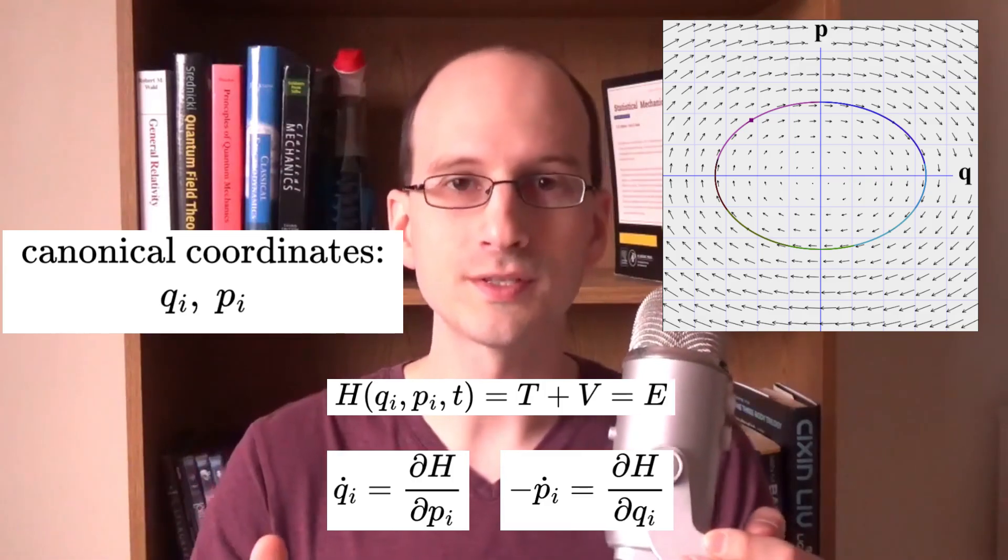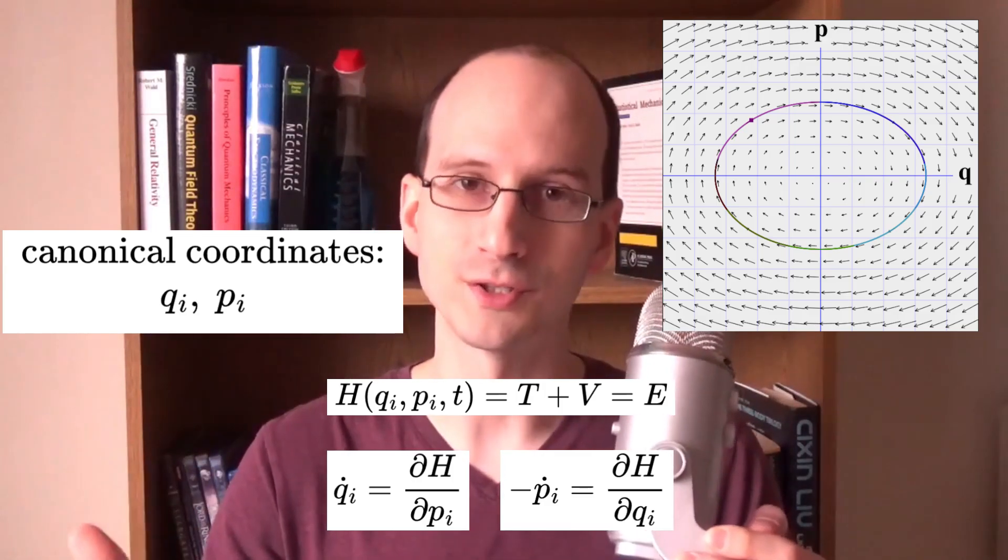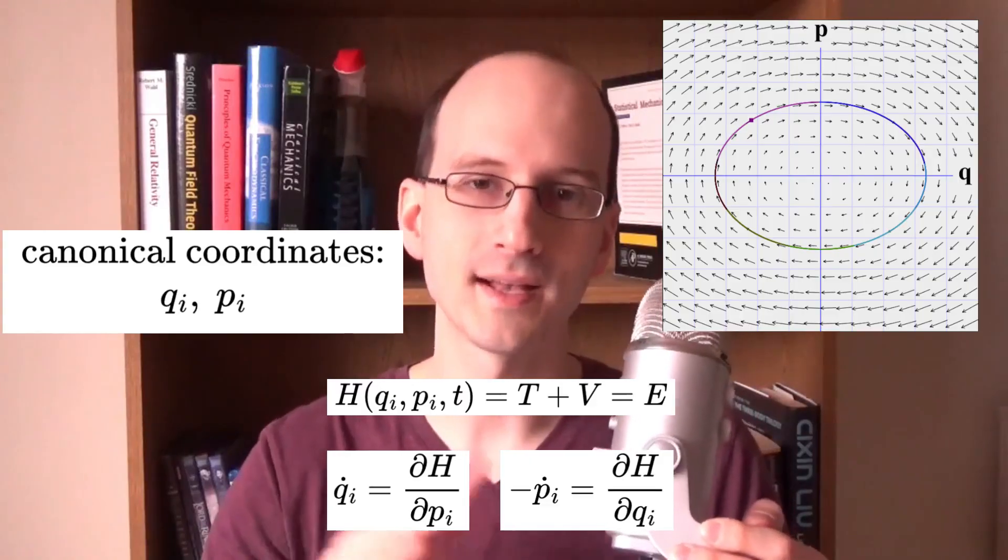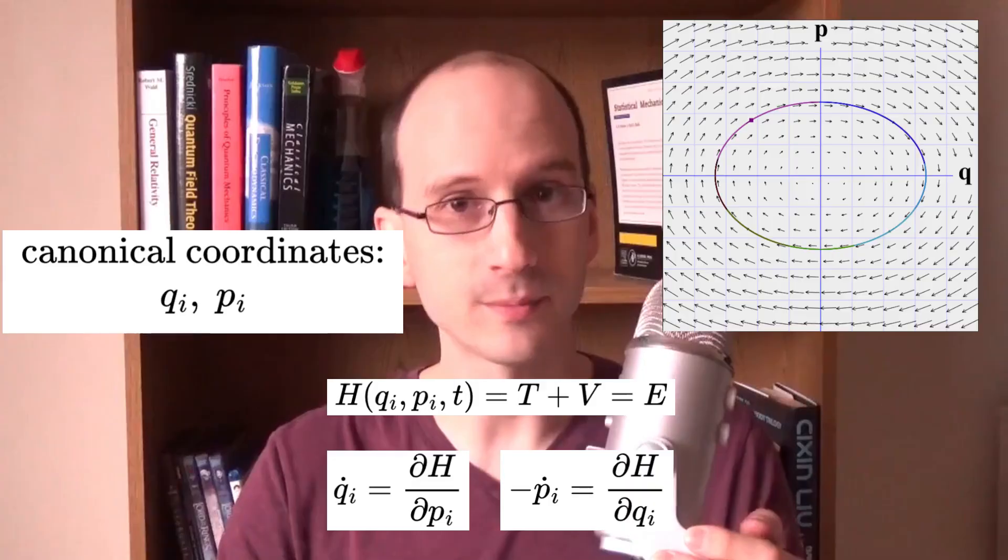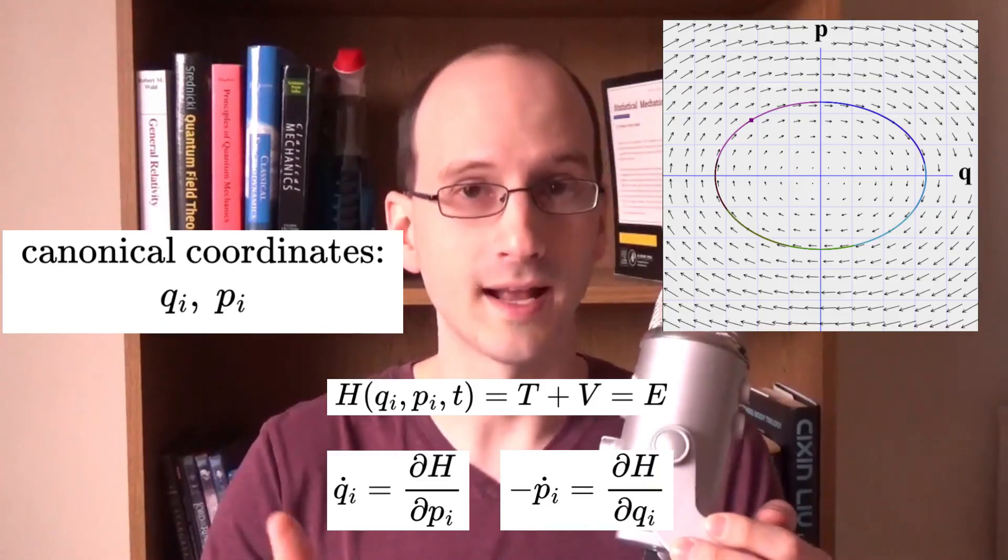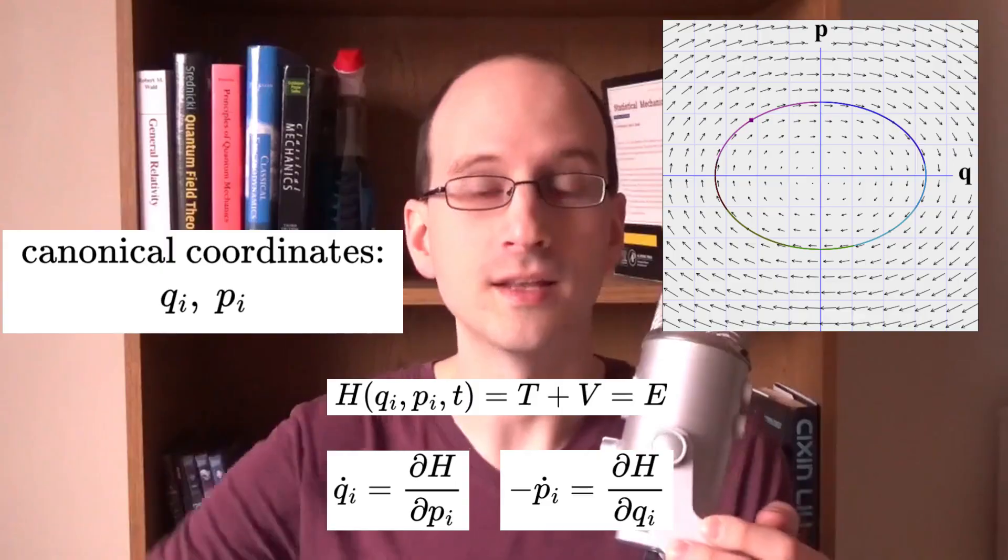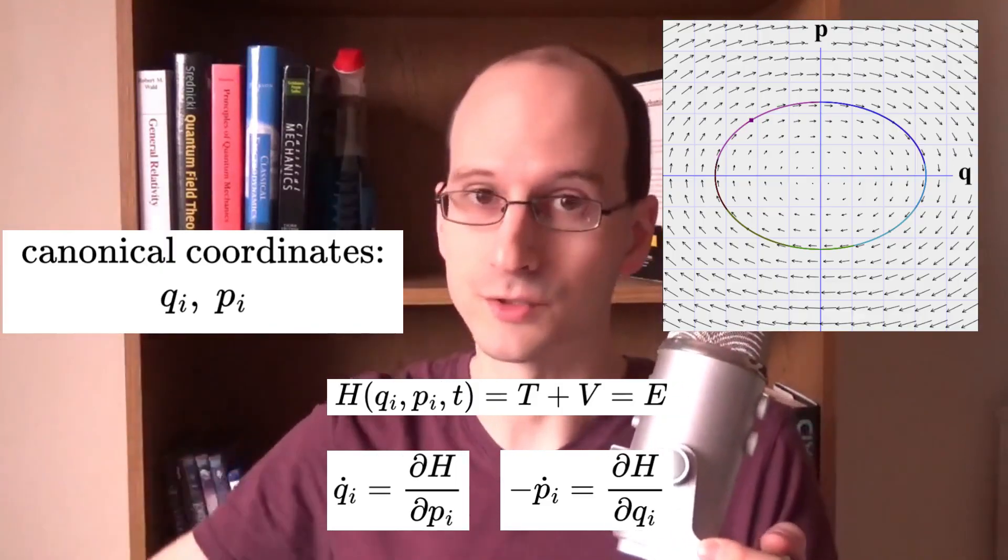Theoretically, if you knew a system's coordinates and momenta to infinite precision, you could calculate its past and future motion to the ends of time. If we apply this to every particle in the universe, then we can conclude that, at least according to classical physics, the entire universe is deterministic.